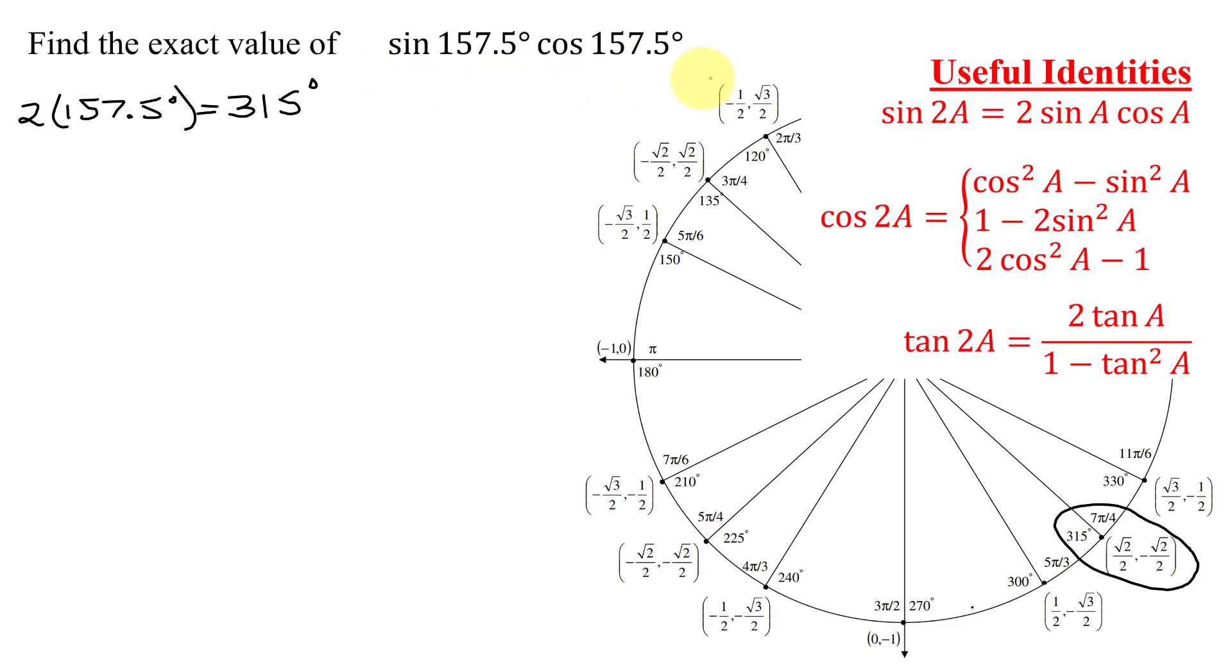Do any of them look like this pattern here, where I have sine of an angle times cosine of an angle? Notice sine of 2A is 2 times sine A cosine A. So I have this part of the identity. I'm just missing the 2. But we can fix that using the fact that 1 half times 2, what's 1 half of 2? The 2s reduce. I just get 1.